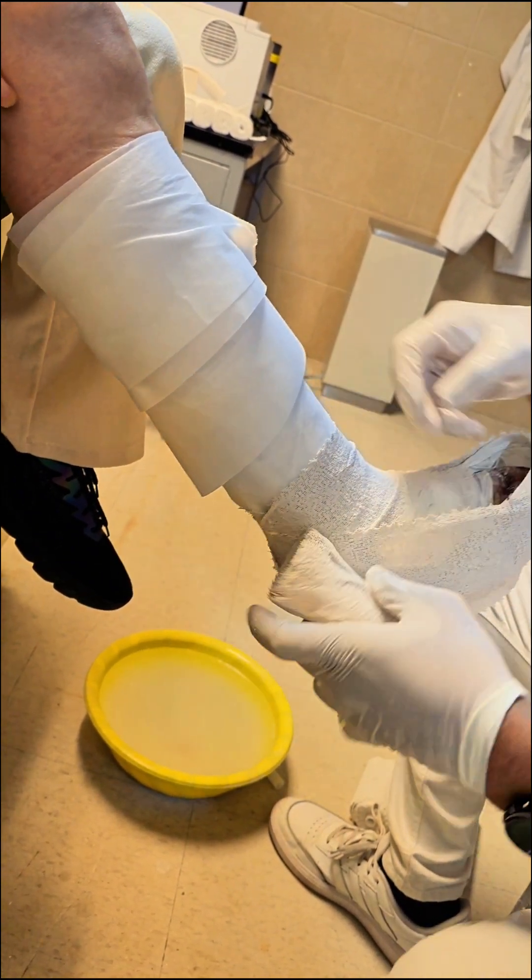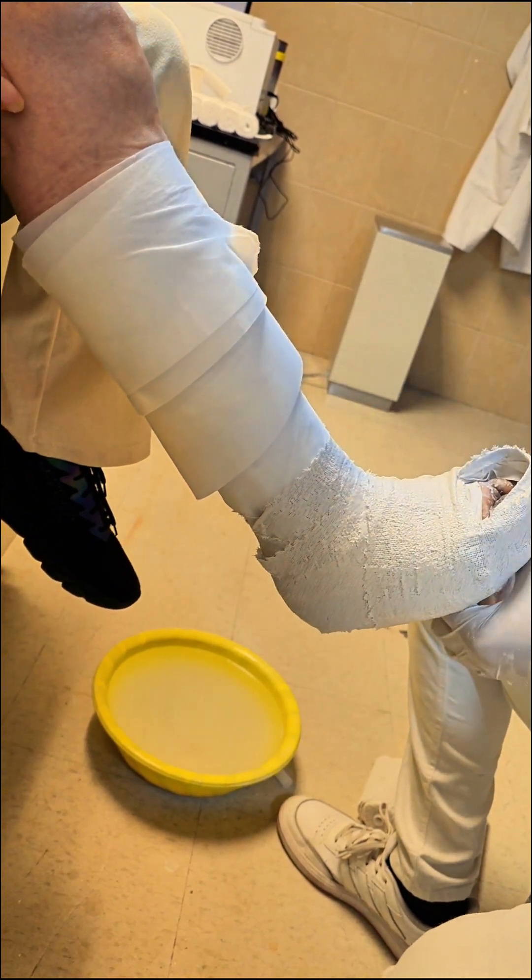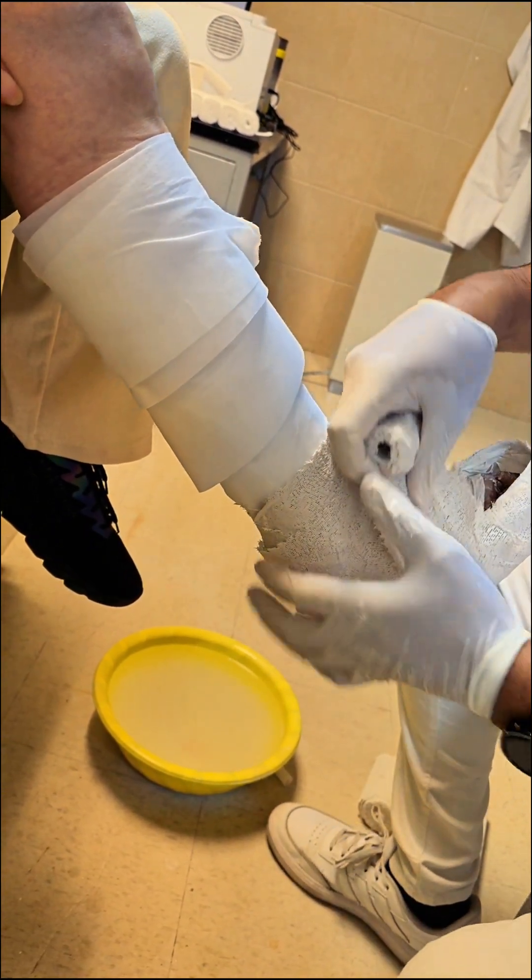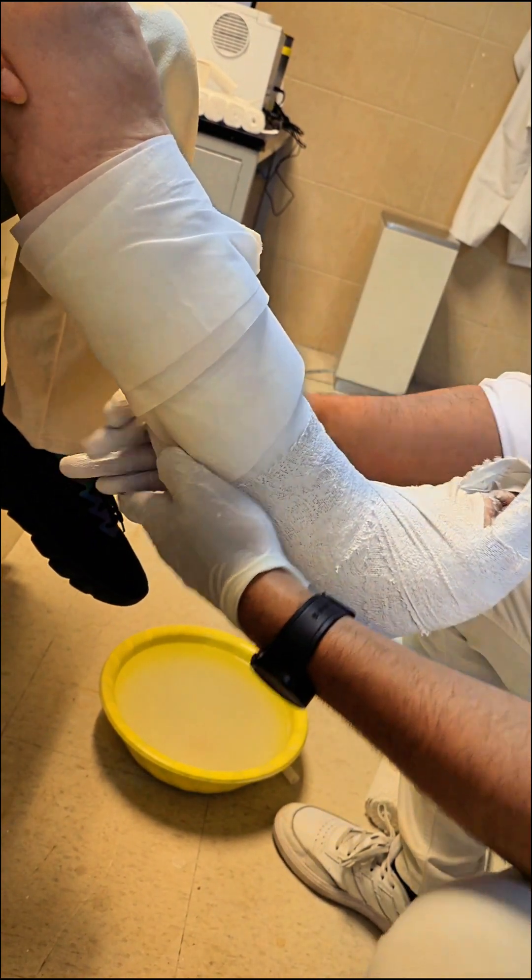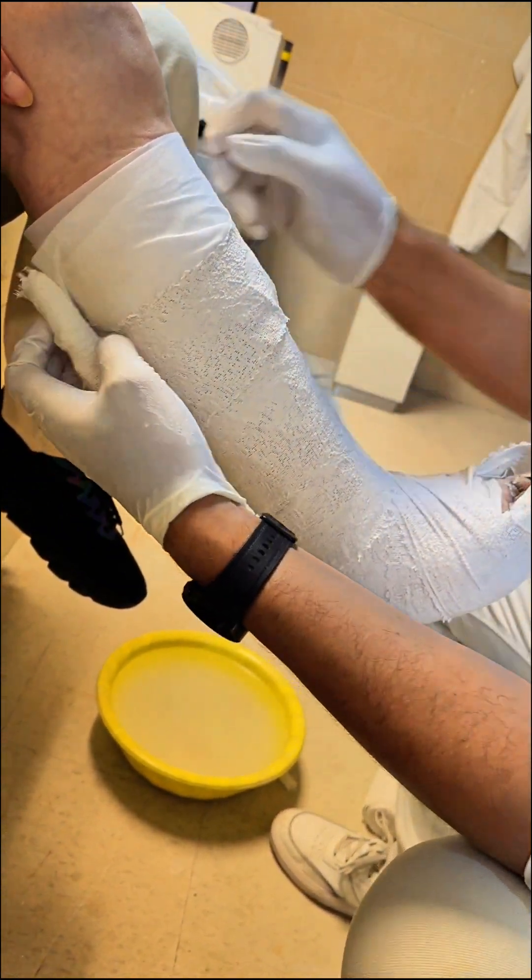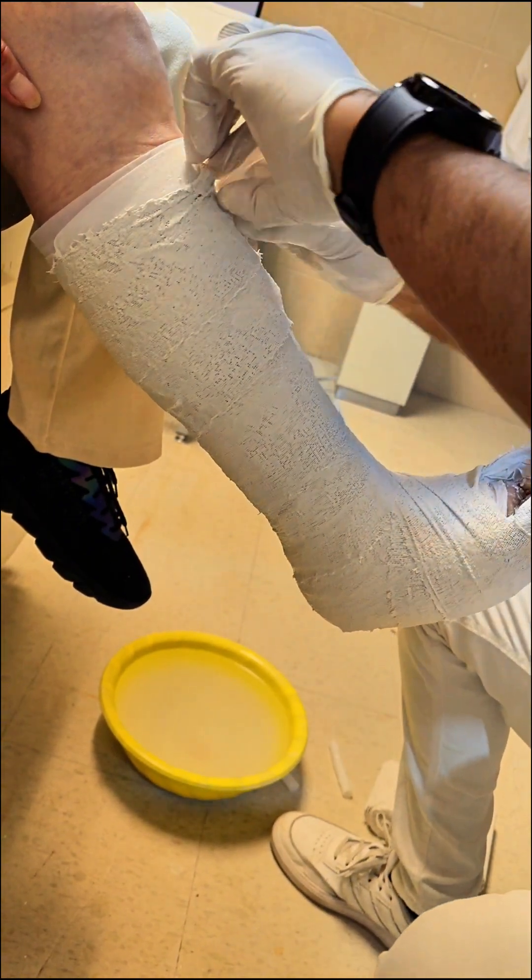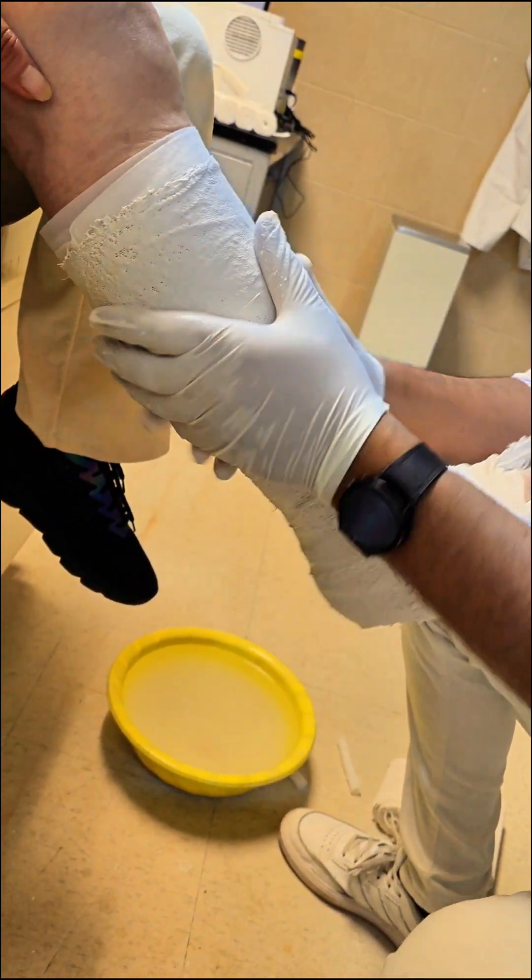Next up is the huarache cast, which is perfect for fractures that need a bit more arch and heel support. Here's the step-by-step process. One: foot positioning. Like with the suro pedaleco cast, start with the foot at a 90-degree angle. This positioning ensures that the cast supports the foot correctly during healing.